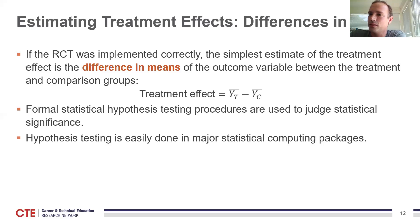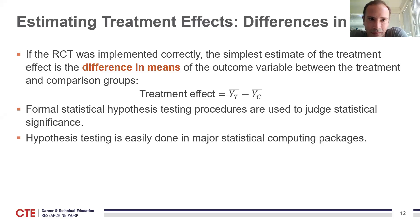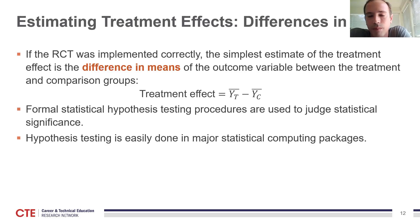On estimating treatment effects: the difference in means between treatment and comparison groups gives an unbiased estimate of the treatment effect from an RCT. Researchers often supplement this with regression-adjusted estimates. You don't really need to do this from a validity standpoint because the difference in means is already unbiased — what you're really doing is increasing the precision when the outcome is correlated with observable baseline characteristics. That's the reason for including covariates when estimating effects from RCTs.